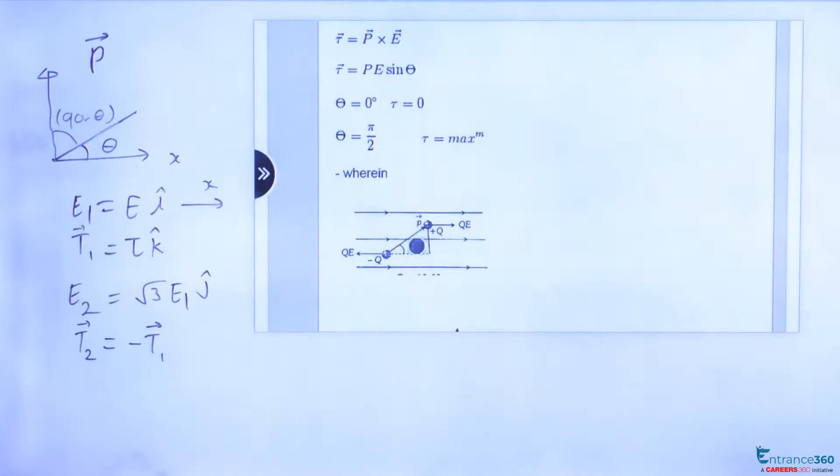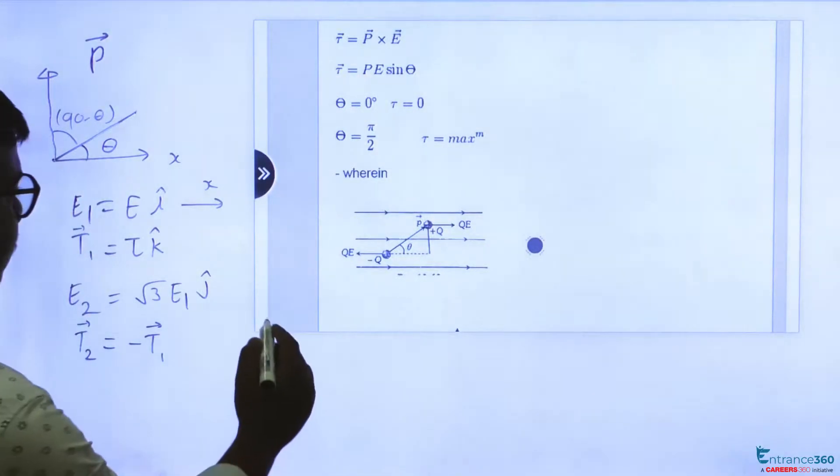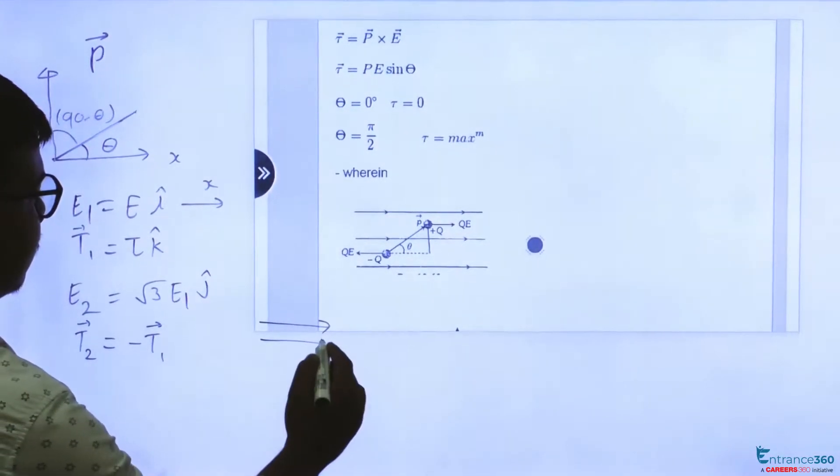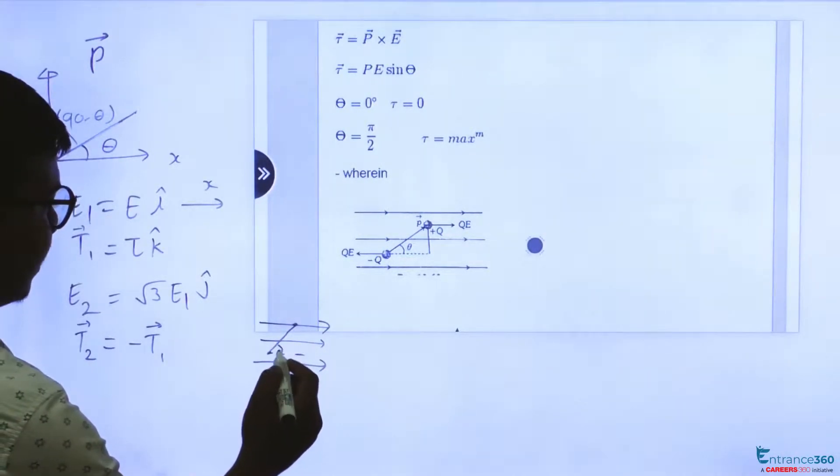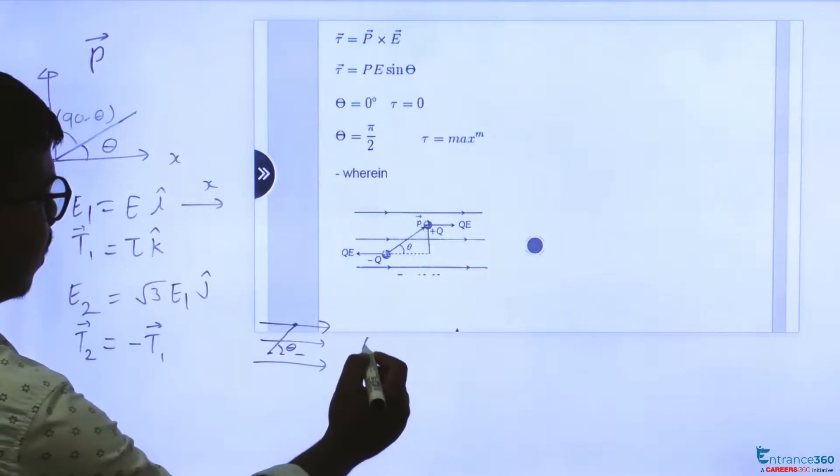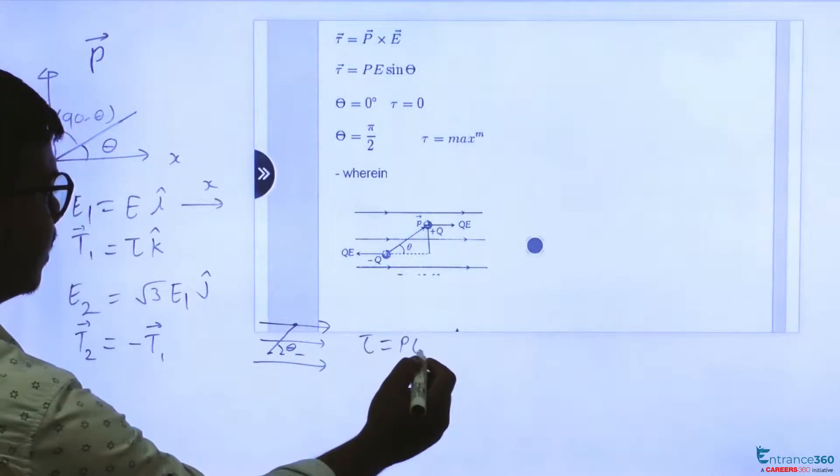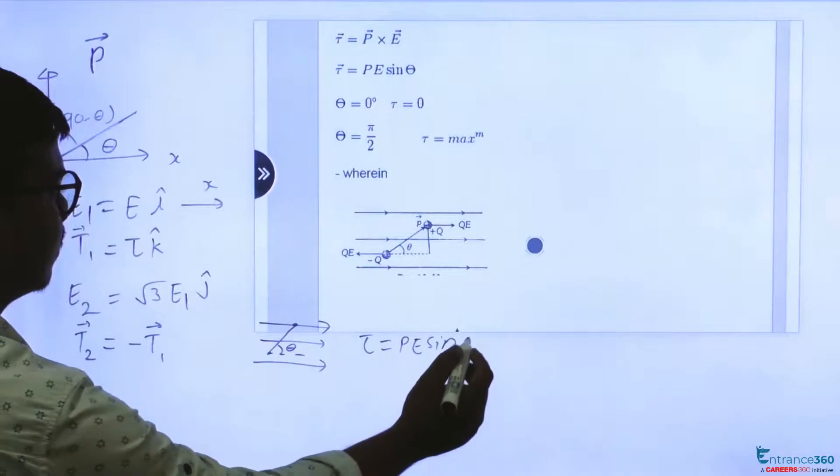In this figure it is clear that let's suppose this is the direction of electric field and this is dipole moment, this is dipole placed, then this is the value of theta, then torque is given as PE sin theta.